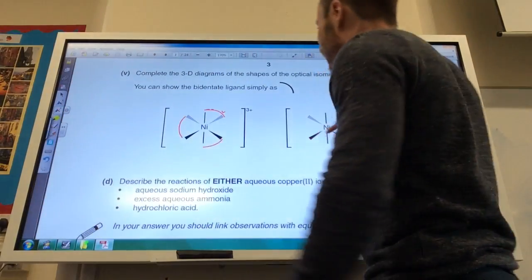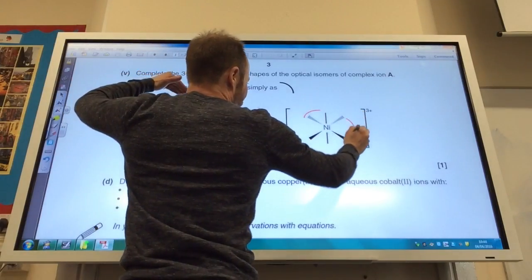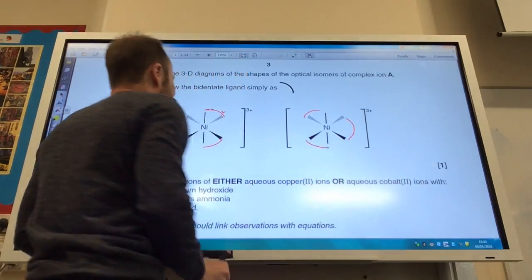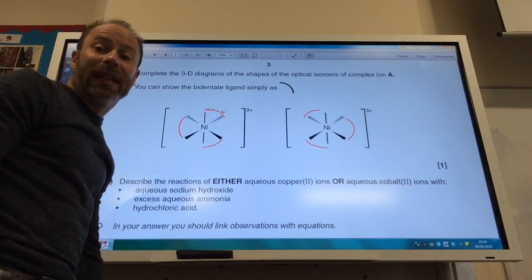And then this has to be the mirror image. So if this one's coming like that, then you go like that, like that, and like that, to give you your structure. And they will be optically active.